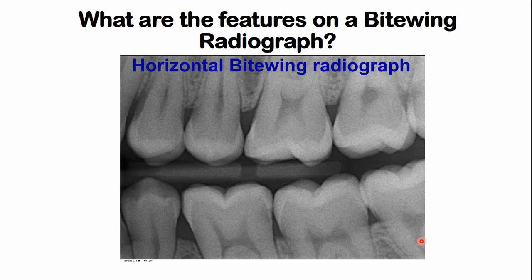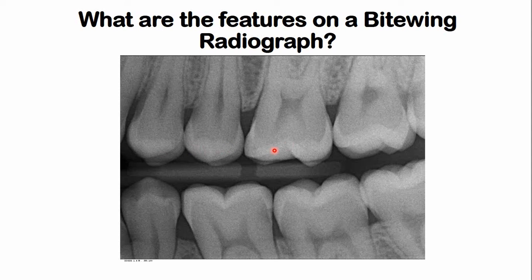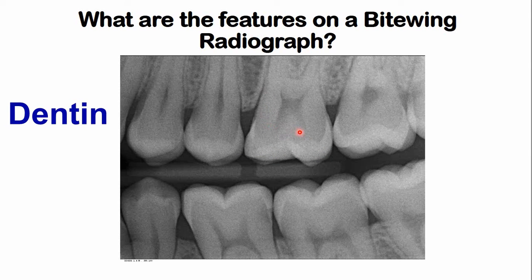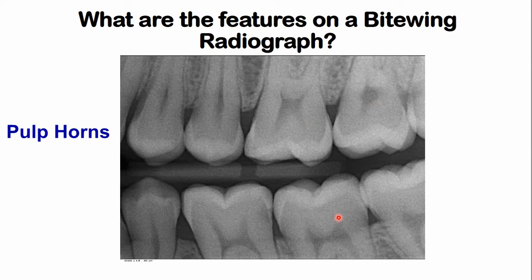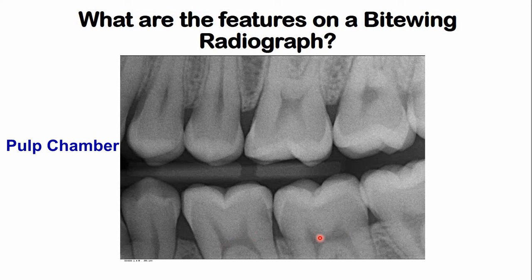This is a horizontal bitewing radiograph. The anatomical features visible include: the radio-opaque or white areas, which represent enamel — the most highly mineralized tissue, so it appears white. The less opaque area is the dentine. The projections within the dentine are the pulp horns, and the chamber below them is the pulp chamber.